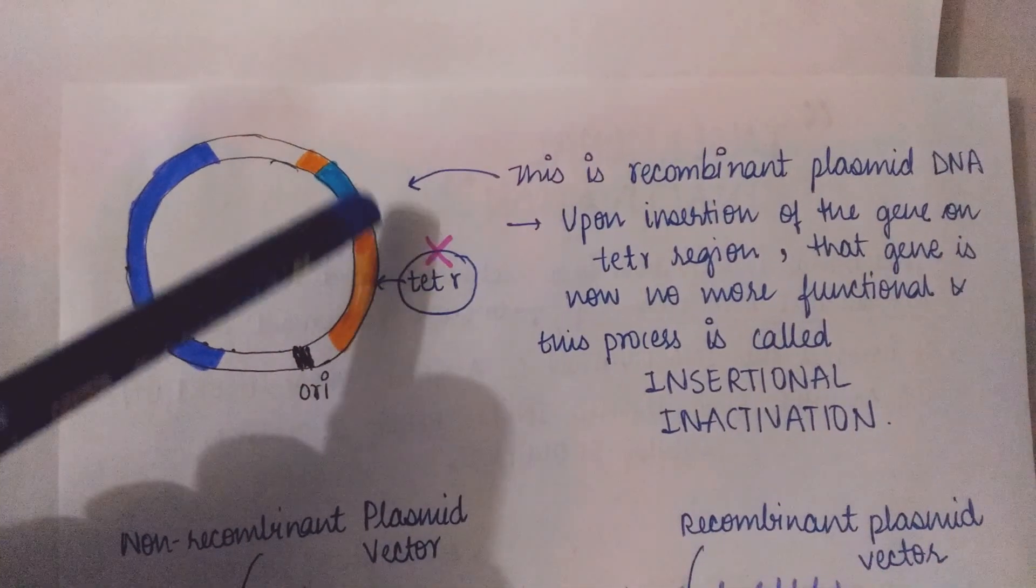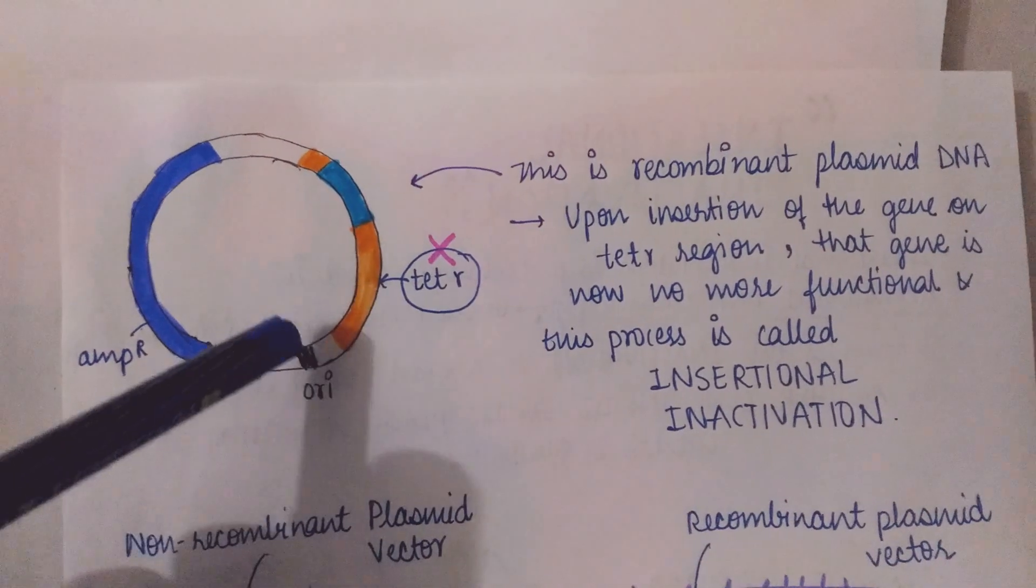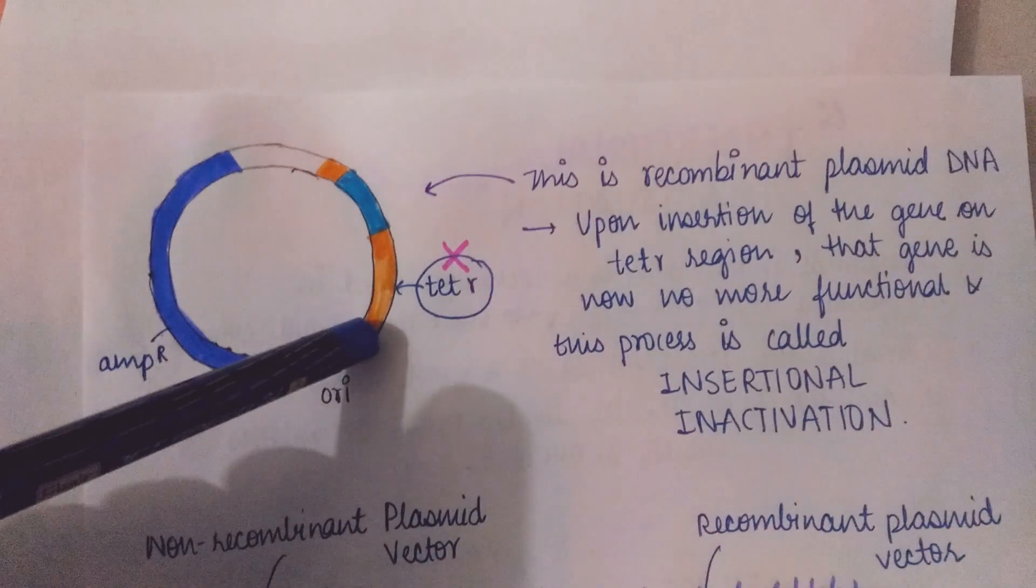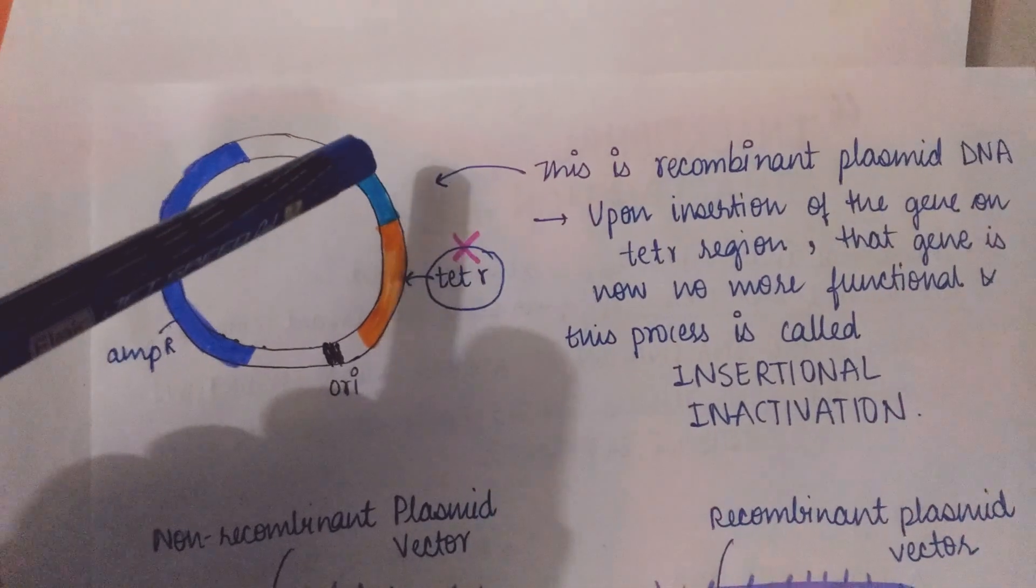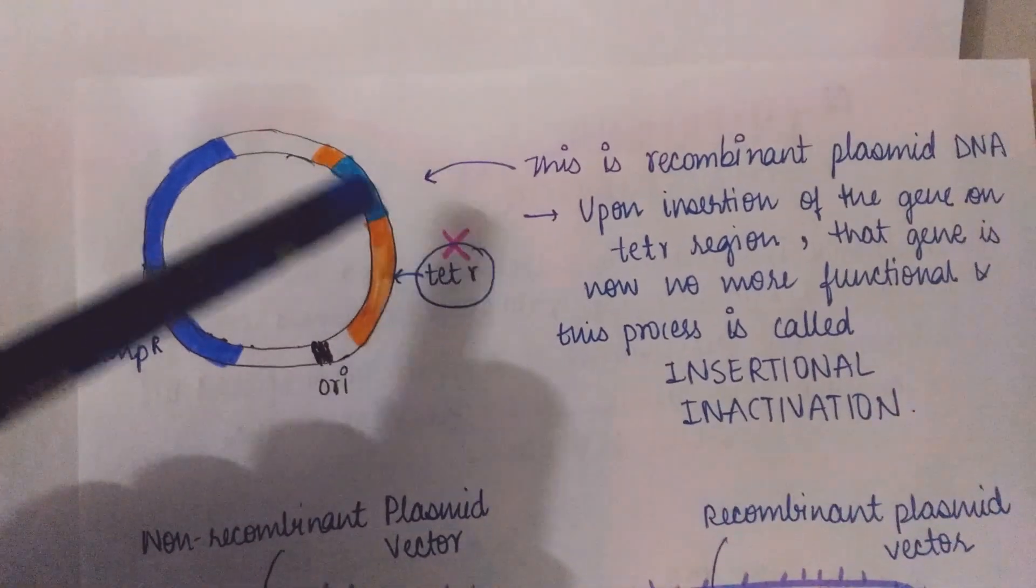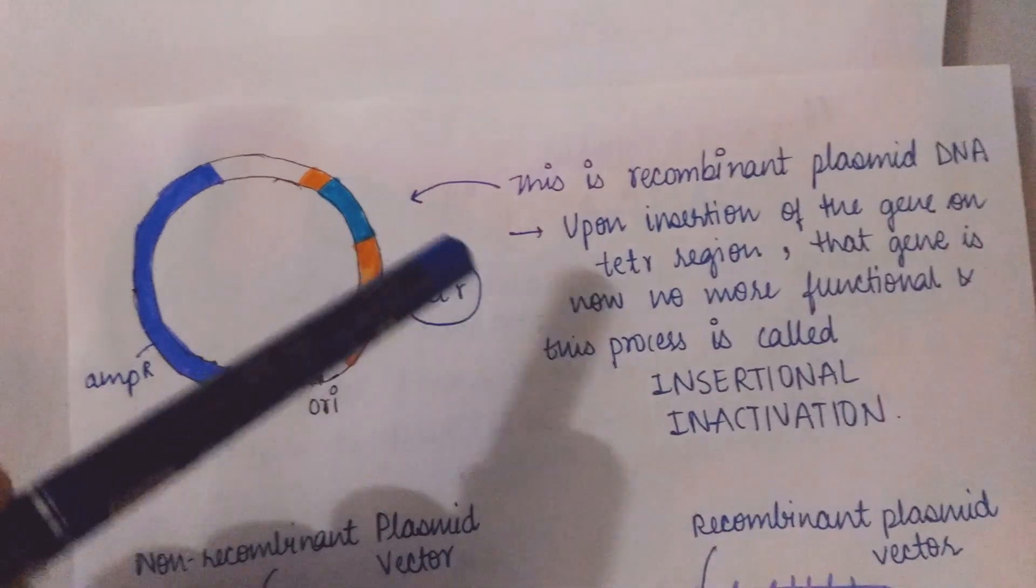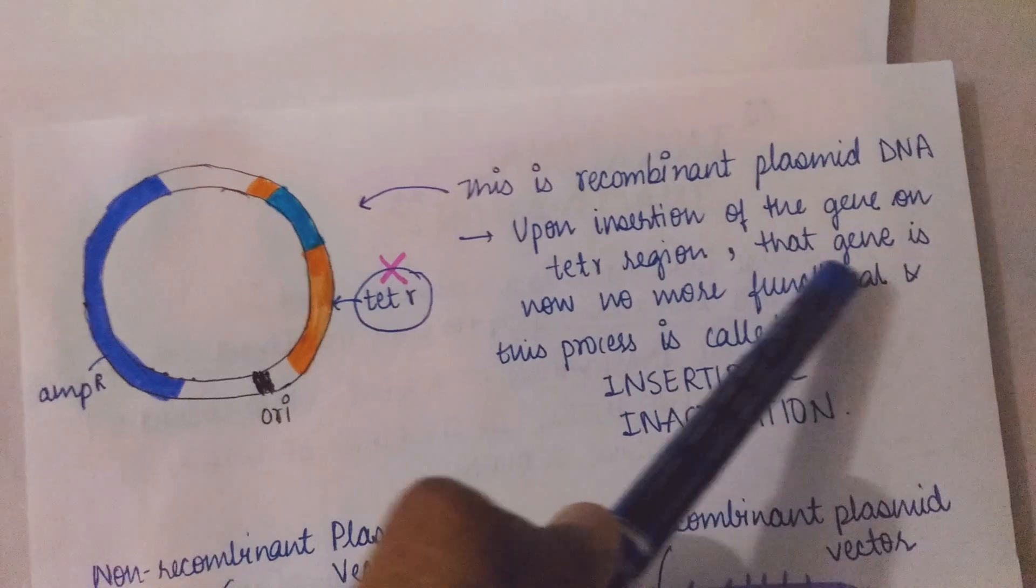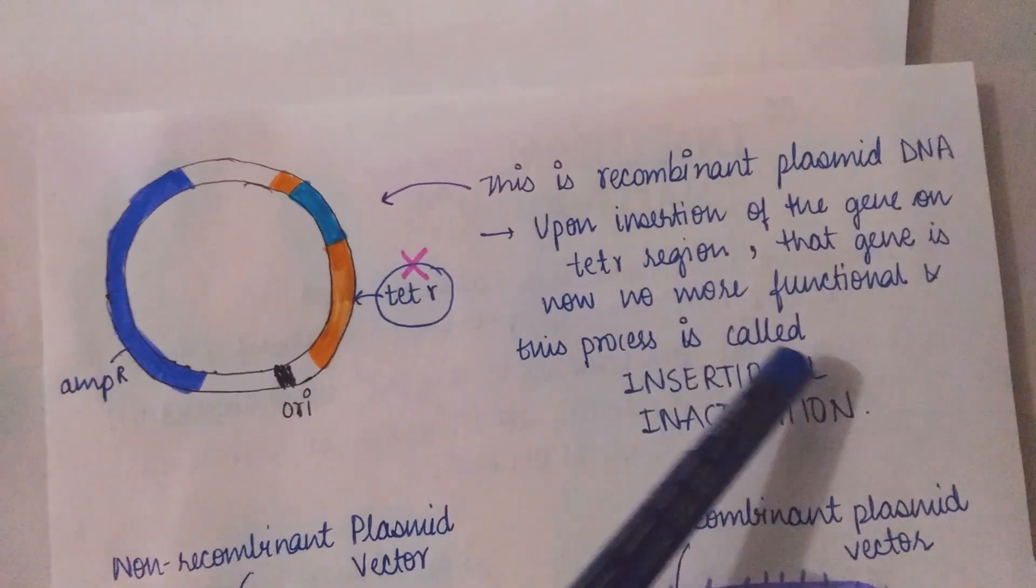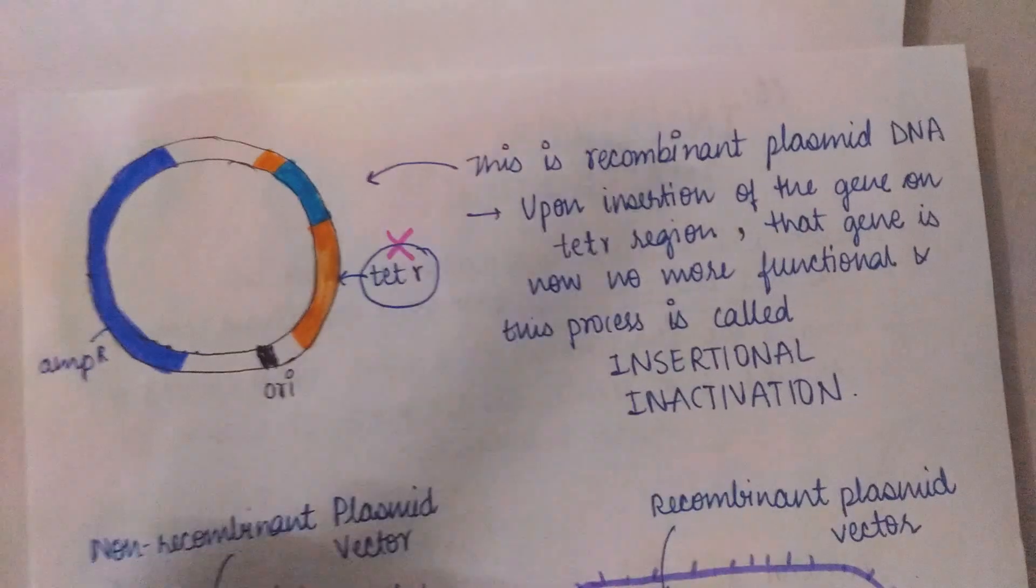Upon the insertion of this gene of interest, this was the tetracycline resistant gene. So this will get interrupted due to the insertion of this gene. So now the tetracycline gene is no more in function. Upon insertion of a gene on tetracycline region that gene is now no more functional. And this process is called insertional inactivation.